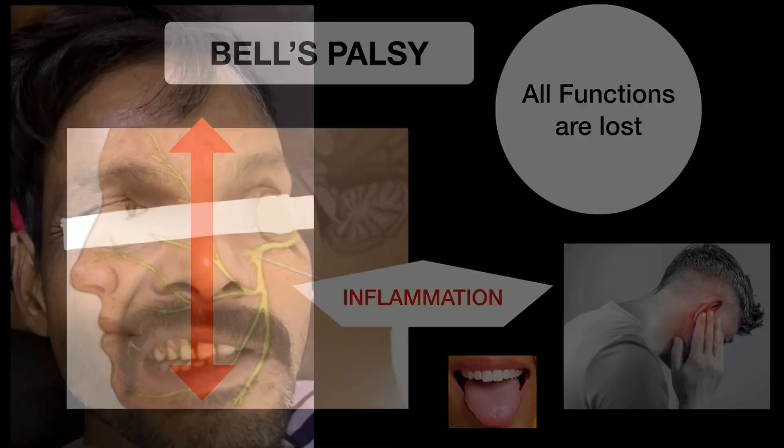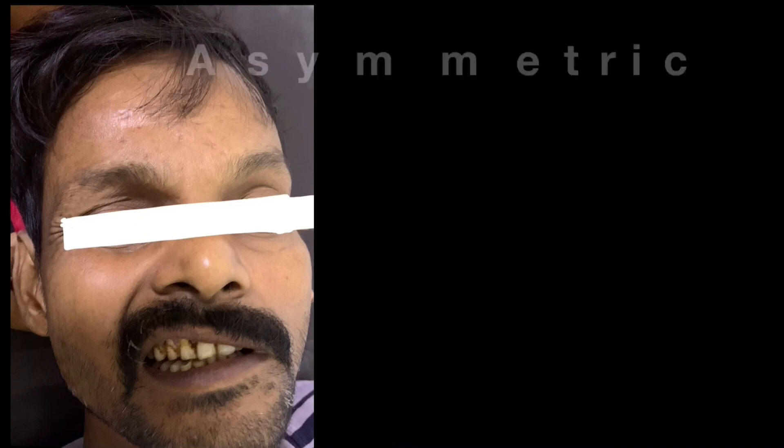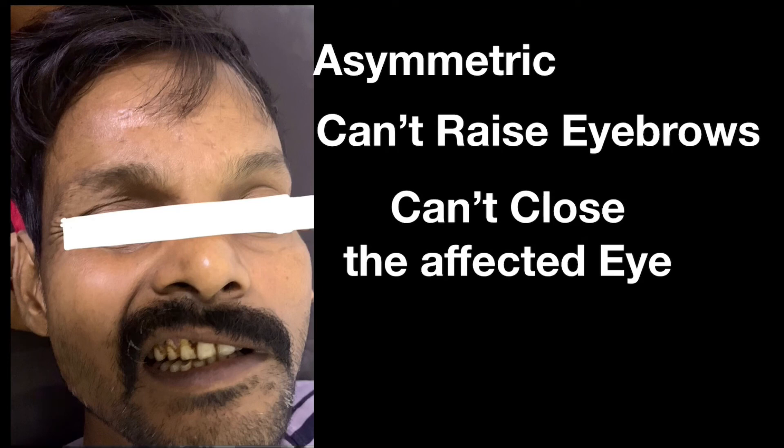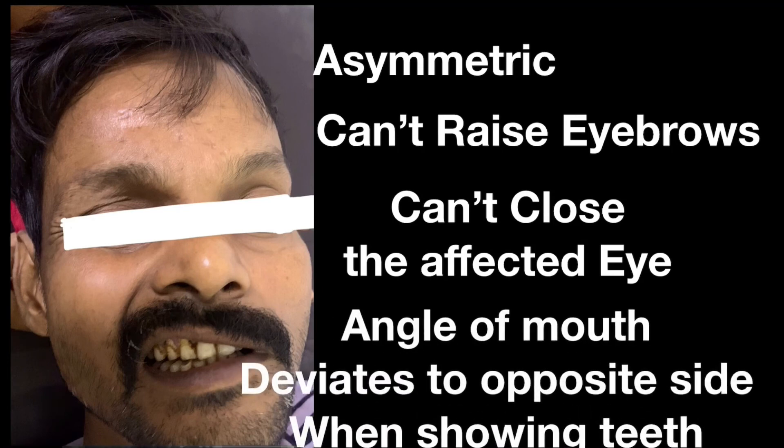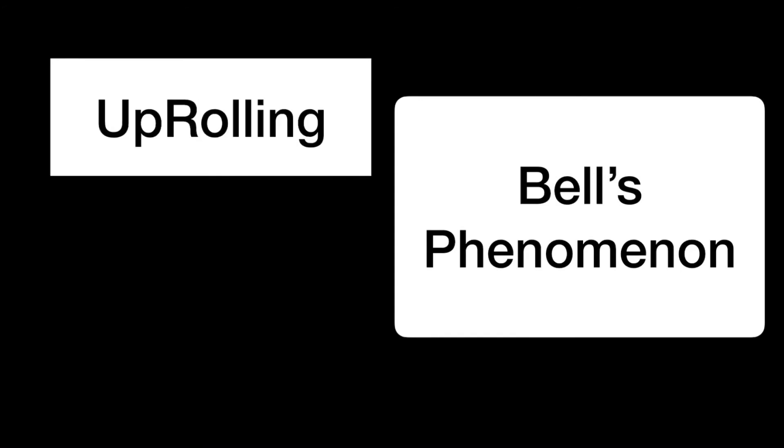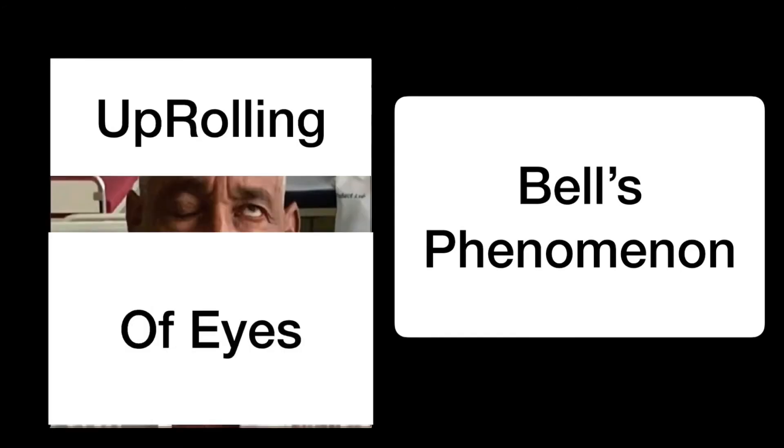On examination of face, you will notice asymmetry. Patient can't raise his eyebrows. He can't close his eyes. And on asking him to show his teeth, his angle of the mouth deviates to the opposite side which is normal. There is a phenomenon called Bell's Phenomenon where there is uprolling of eyes upon attempted closure of the eyes like this.